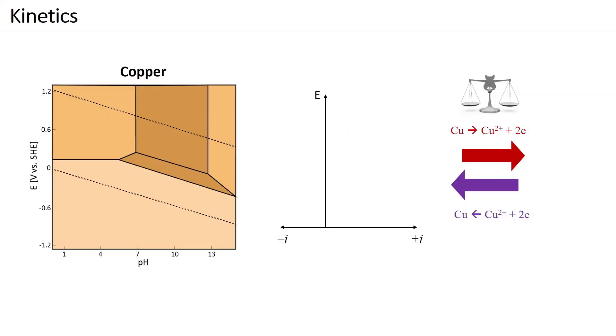Again, the lines in the Pourbaix diagram show where the forward and backward parts of a reversible reaction are at equilibrium. This is shown here with the green dot for the example of copper dissolution and deposition at pH 4. If the potential moves away from the line, the equilibrium does not hold anymore.